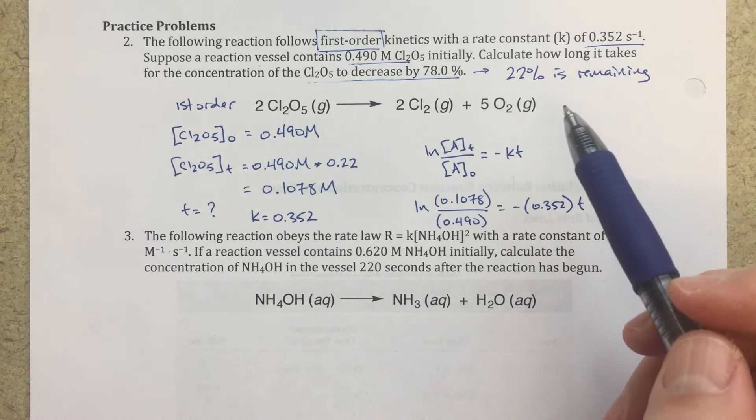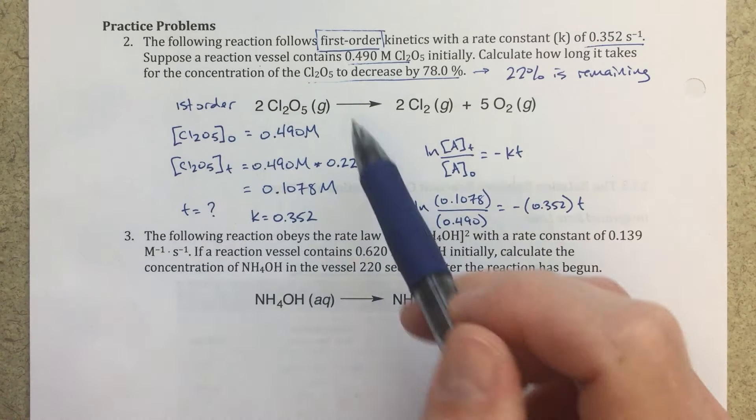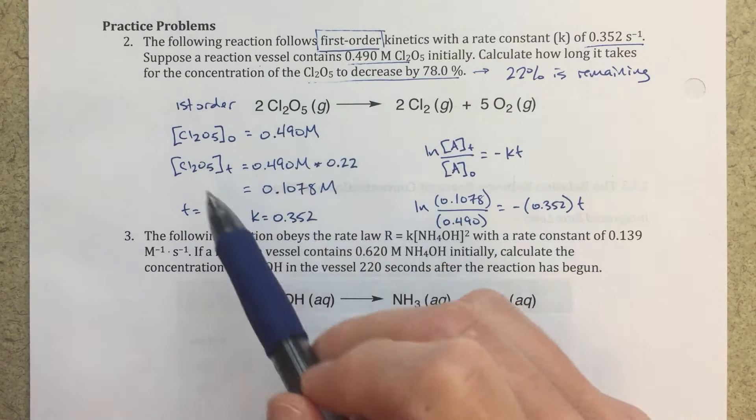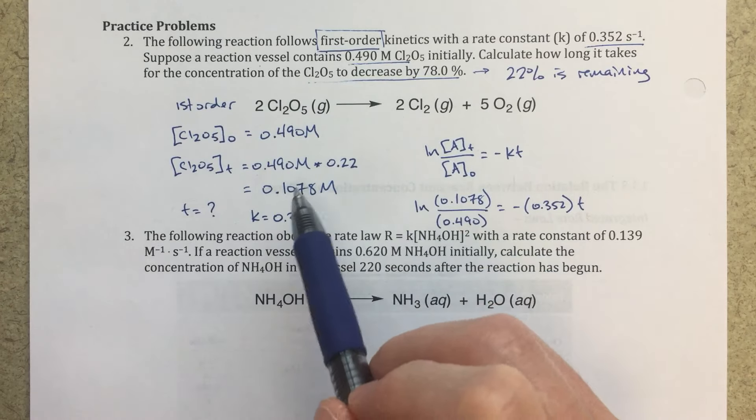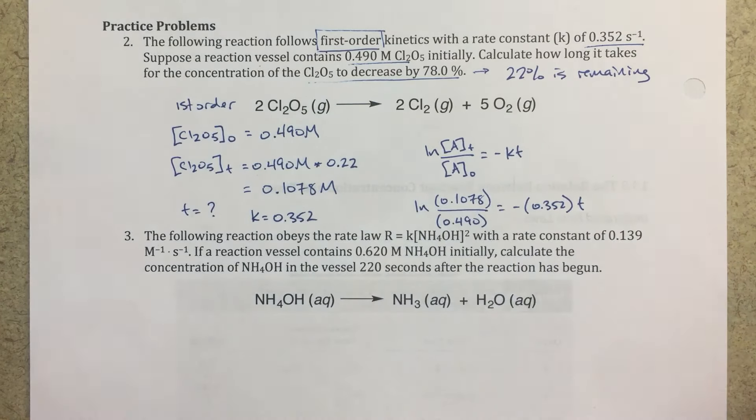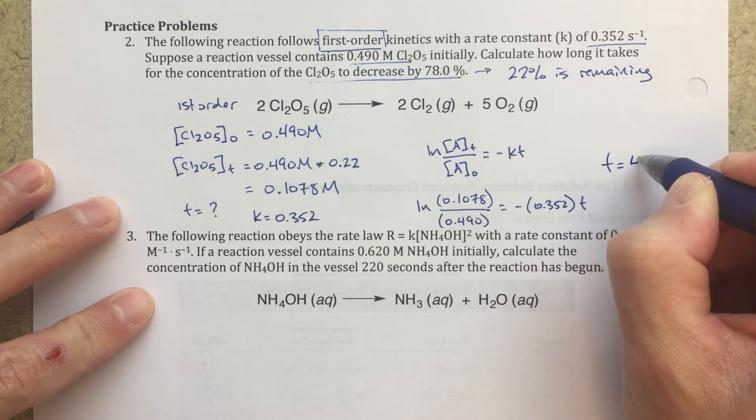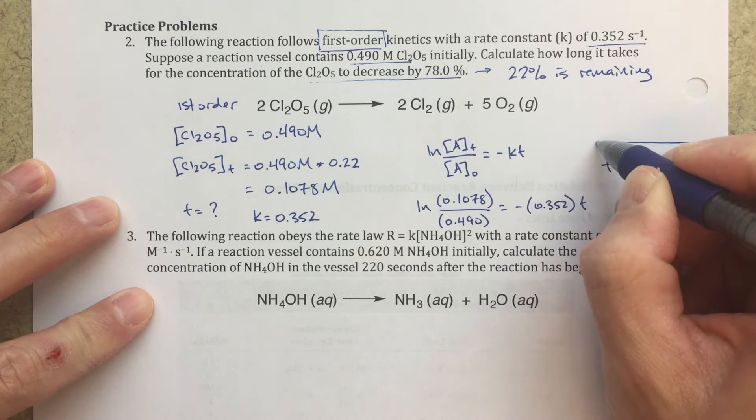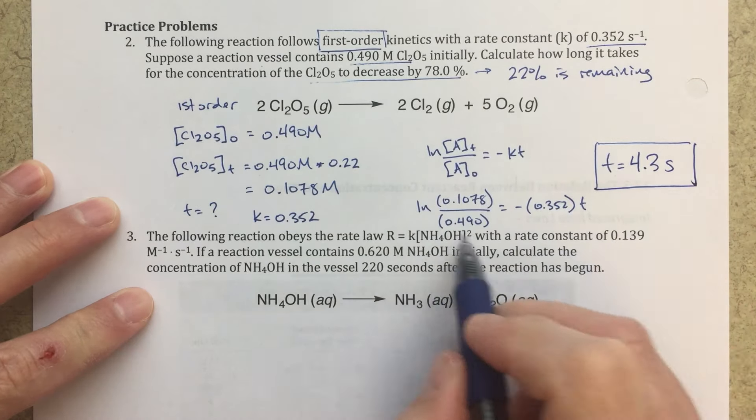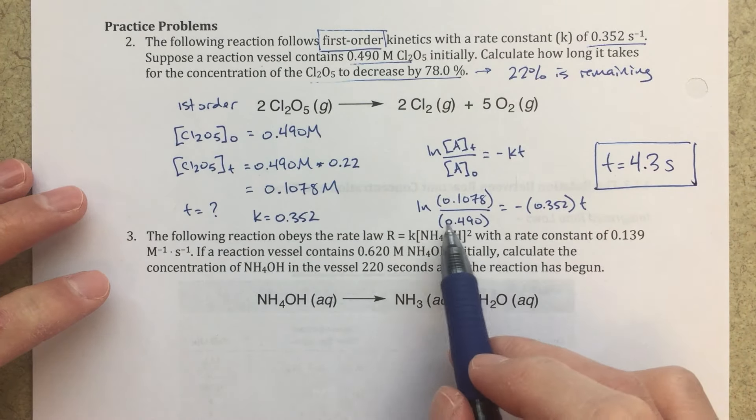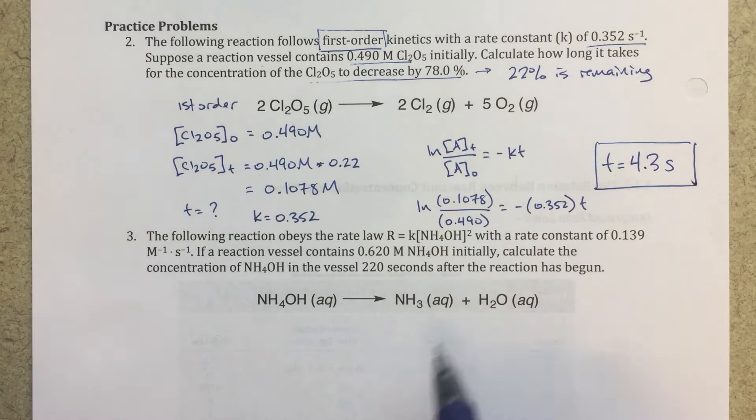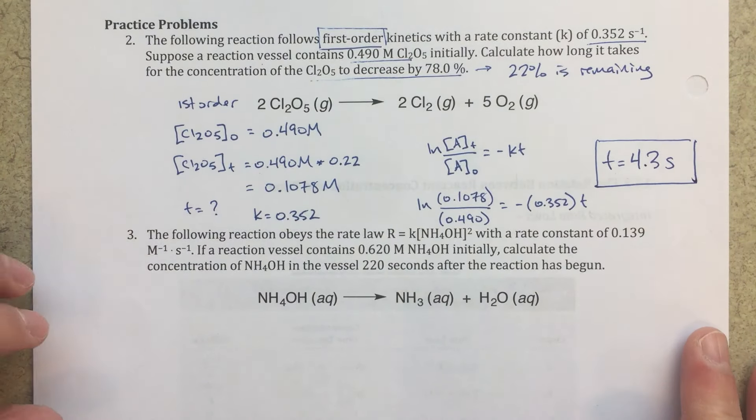So in these problems, the hardest part is figuring out, organizing your information. And then once you've organized your information, you should be able to just plug it in, do some math and find that for this problem, T equals 4.3 seconds. So when you solve this, as simple as finding a value here, dividing by minus 0.352, you should get 4.3 seconds. Let's do the next one.